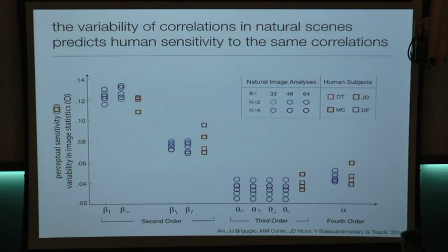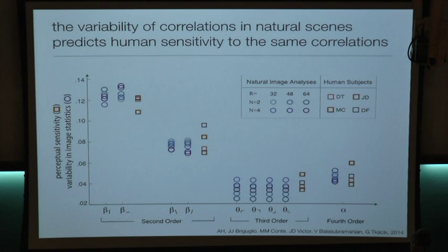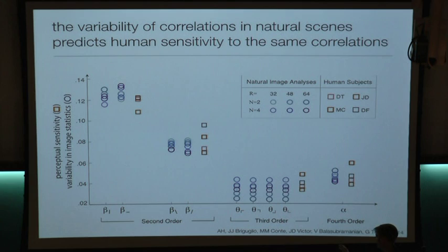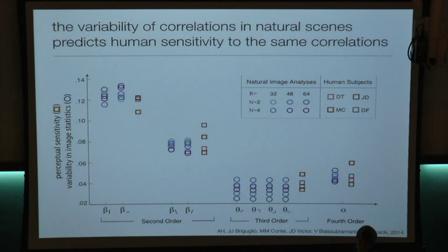We've done this analysis for two, now three, different image databases, and the results are consistent — but these involve naturalistic structures, not man-made structures. The statistics would differ if we were looking at a set of man-made structures. Whether we would see that in visual sensitivity depends on the time scale over which this mechanism has evolved or adapted. An interesting experiment would compare sensitivity thresholds between someone who had only ever seen natural scenes and someone who grew up in New York City. We haven't done that but it's a very good question.